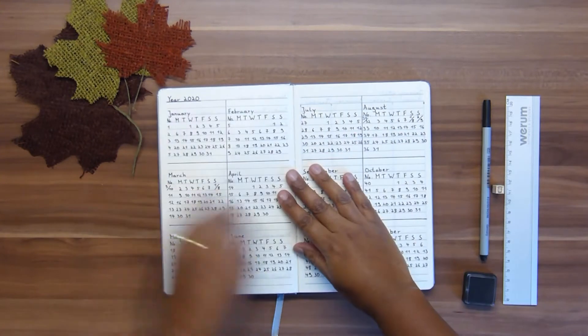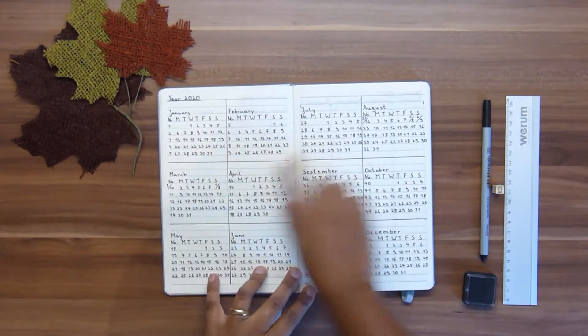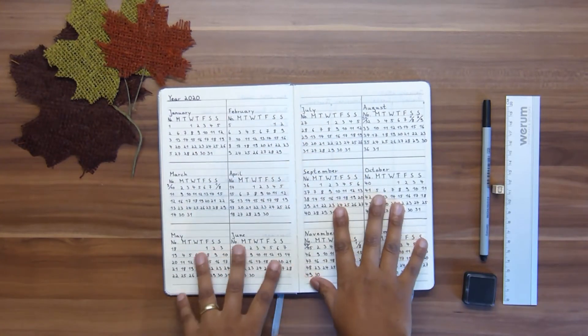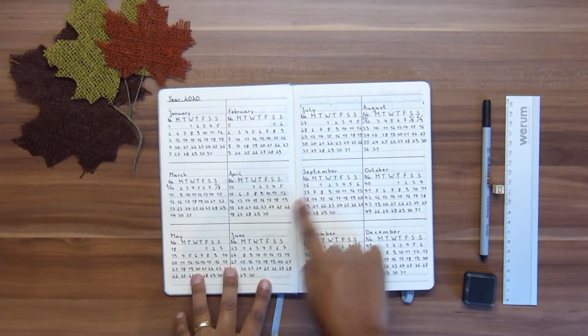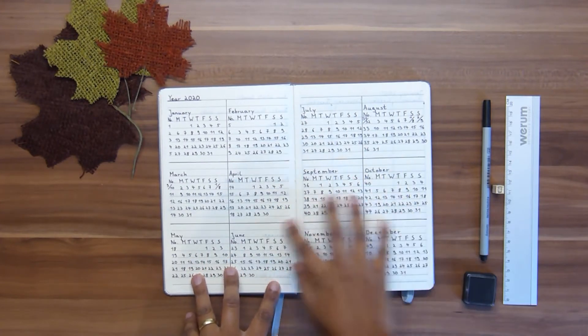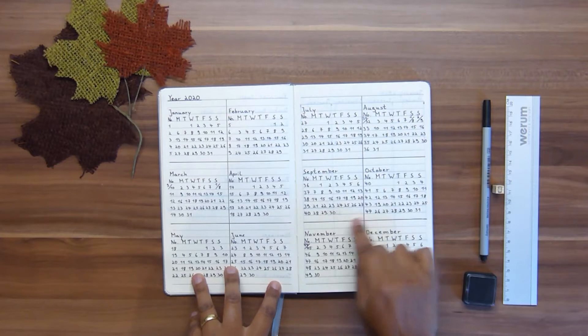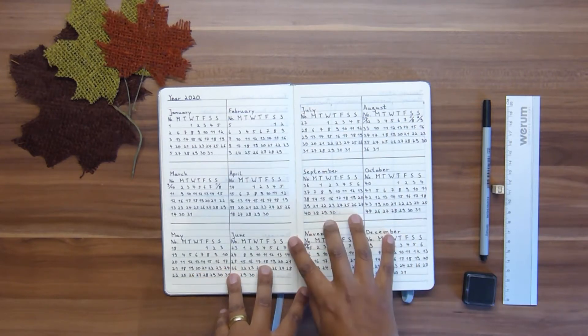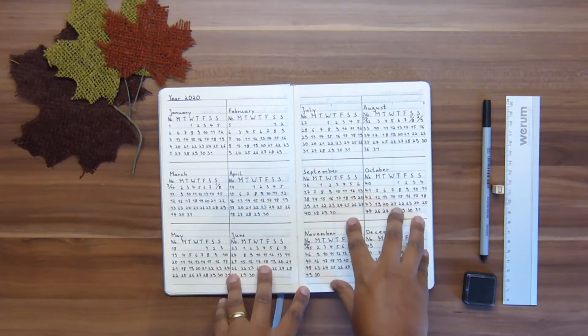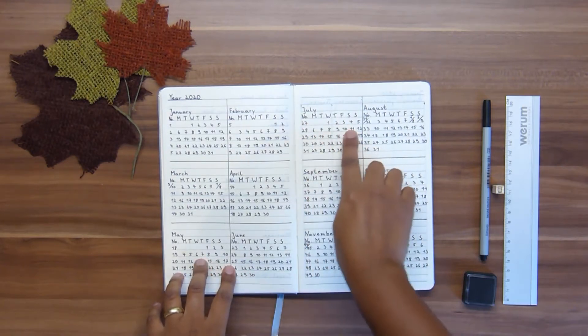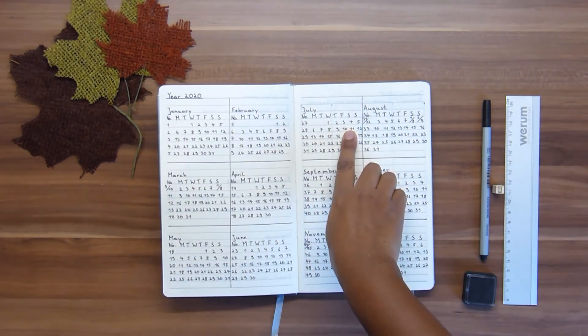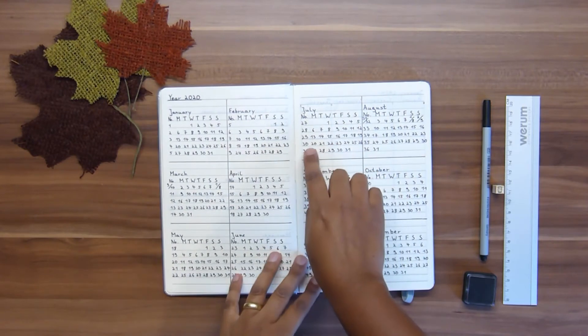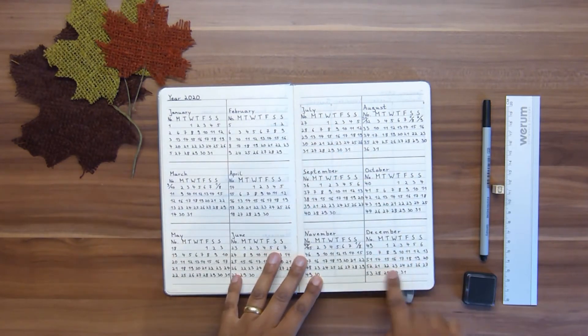On the next two pages, I just put a monthly overview. I didn't do them too neatly because this is not a bullet journal where I could line this out as well. For me, this is totally okay. I just want to see the weeks and the days in each month, what days they are on.